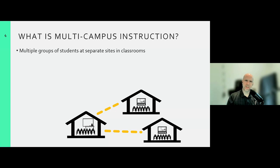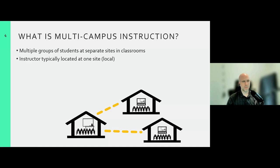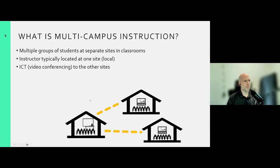We'll start by talking about what we mean by multi-campus instruction. Fundamentally, multi-campus instruction involves multiple groups of students at separate sites operating in classrooms. We have one location where an instructor is present along with a cohort, as we're all familiar with. But at the same time, we have other locations with students in classrooms attending through video conferencing. In this mode, we have a single instructor typically at one site—which we'll call the local site—and ICT video conferencing to other sites where students attend the presentation by video conference.